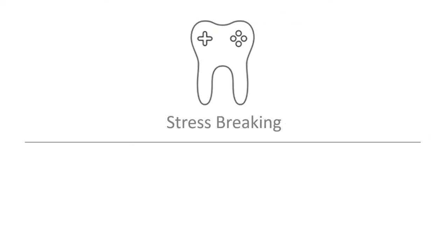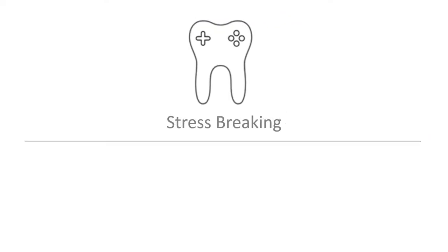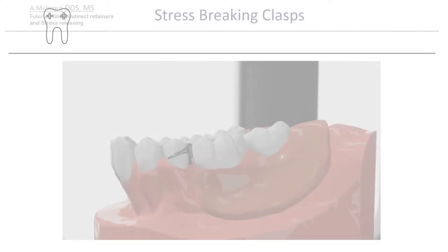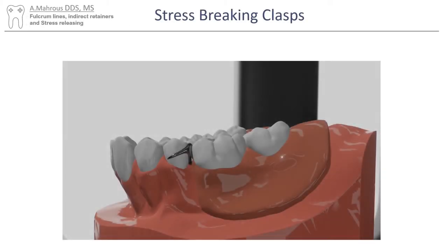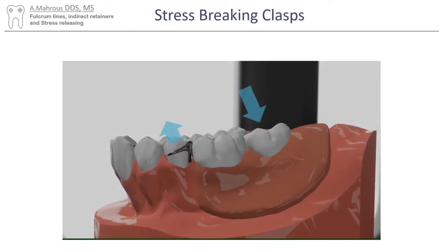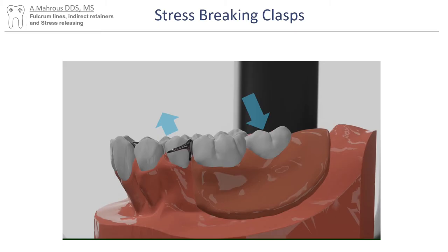Now let's move on to understanding what stress breaking is. As mentioned previously, when apical pressure is applied on the distal extension segment of the RPD, an opposing upwards movement occurs on the other side of the fulcrum line that can result in extraction forces on the abutment teeth by their retentive clasp.